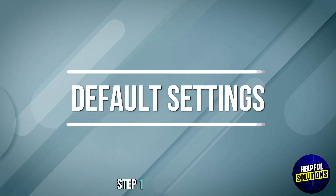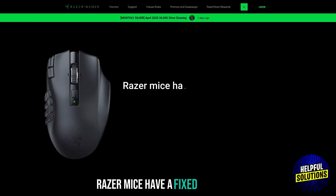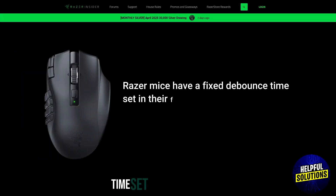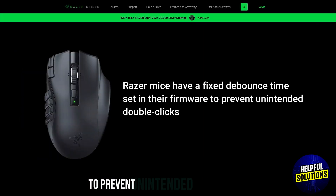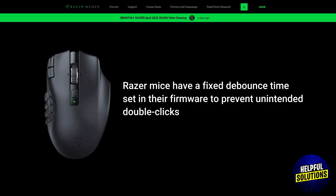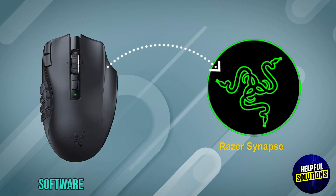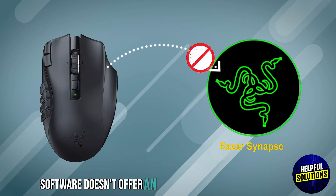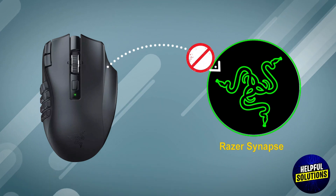Step 1: Default Settings. Razer mice have a fixed Debounce Time set in their firmware to prevent unintended double clicks. Currently, Razer Synapse software doesn't offer an option to modify this Debounce Time.